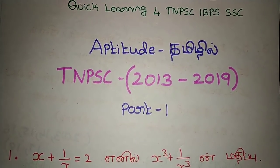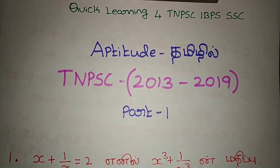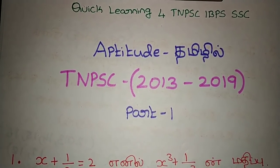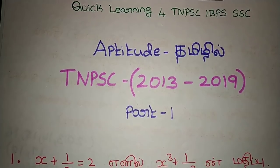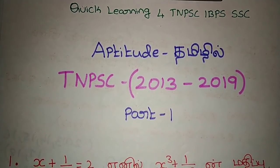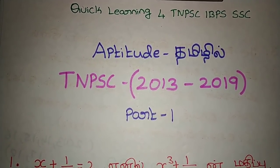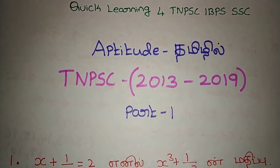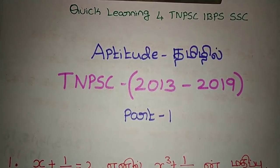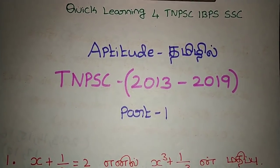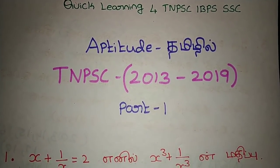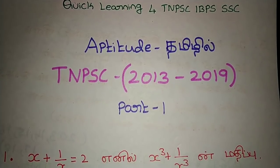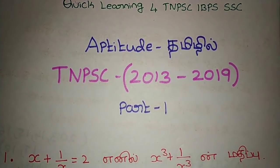Friends, good morning. TNPC exam has a minimum of 25 questions. TNPC covers group 2A, group 2, group 4, Tamil Nadu exam, Forest exam, Light barrier exam, and High Court exam. All of these exams have a minimum of 25 questions.